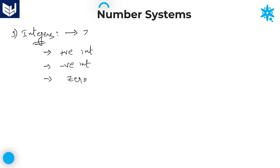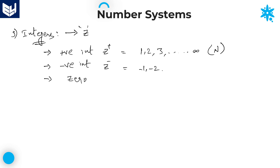We can also call positive integers as natural numbers. Coming to negative integers, negative integers are nothing but negatives of all natural numbers — minus 1, minus 2, minus 3, and so on up to minus infinity. That is called as negative integers.